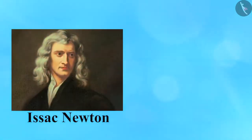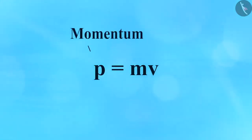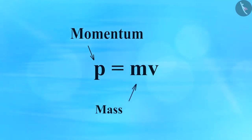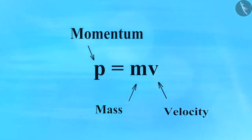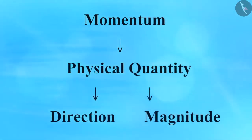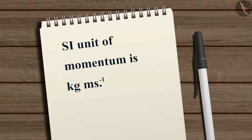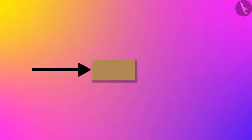Sir Isaac Newton introduced one such quantity called momentum. Mathematically, the momentum P of an object is defined as the product of its mass m and velocity V. Momentum is a physical quantity that has both direction and magnitude; the direction of momentum is the same as that of velocity. Momentum is a vector quantity. The SI unit of momentum is kilogram meter per second.